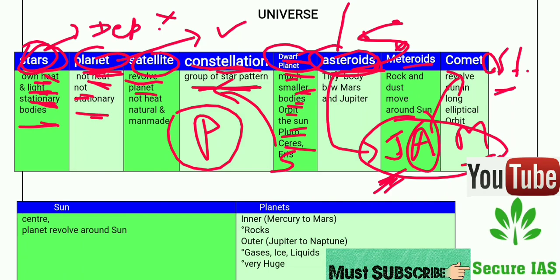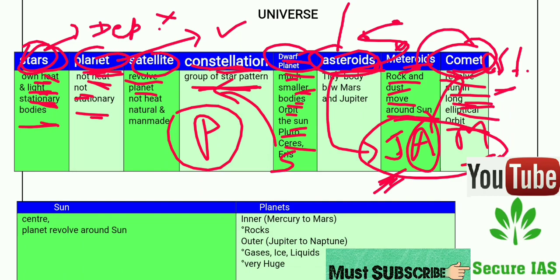Meteoroids are rocks and dust that move around the Sun. Comets also revolve around the Sun just like meteoroids, but the key difference is that comets have long elliptical orbits. This is a very important point — comets have long elliptical orbits, meteoroids do not.